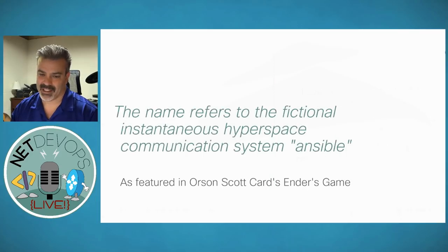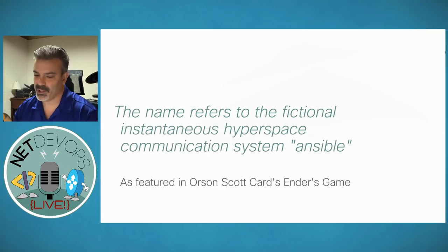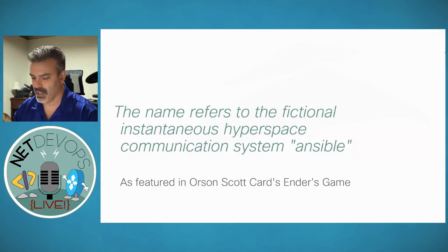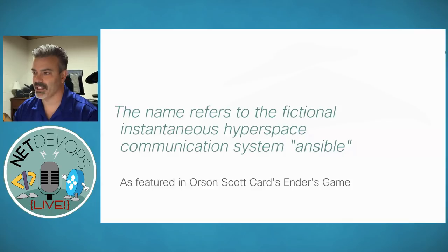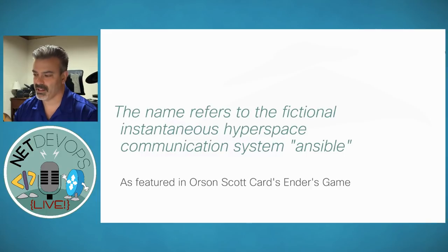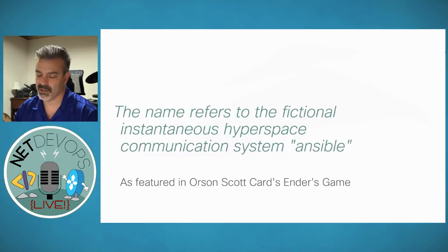A lot of times I get the question: what does Ansible mean? The name refers to a fictional instantaneous hyperspace communication system called an ansible, featured in Orson Scott Card's book Ender's Game. It makes a lot of sense to name the product this way, as it reaches out and touches multiple endpoints and gives you quite a bit of control to communicate with those endpoints.